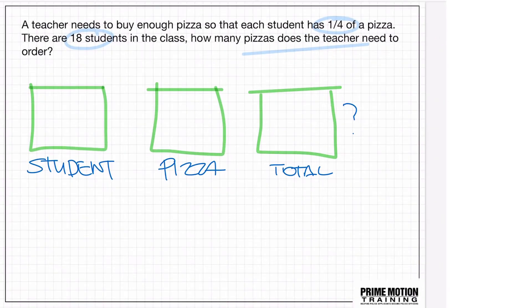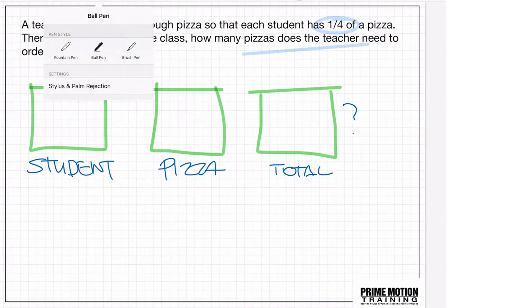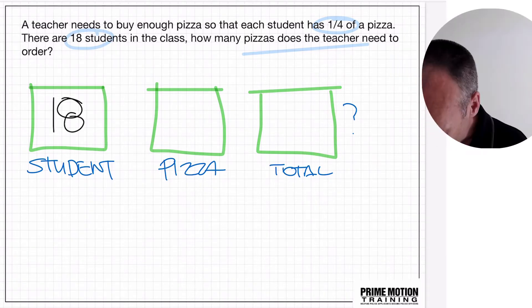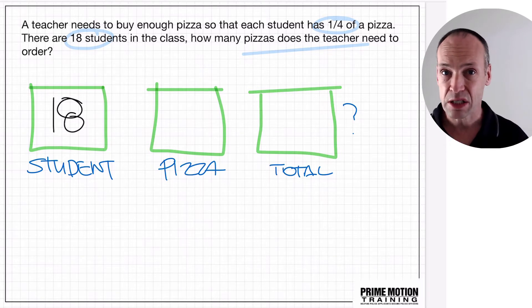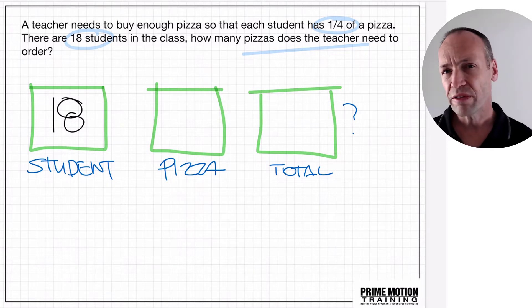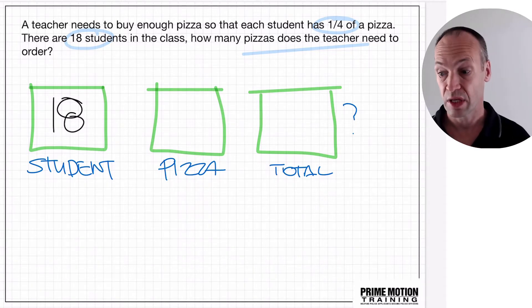So let's extract some of the information. We've got our 18 students. And let's replace the fraction for a moment. What if it wasn't a fraction? What if it was a whole number? What if each student need to have two pizzas each? They're hungry. 18 students, two pizzas each. How many pizzas does this you need to order?